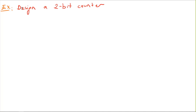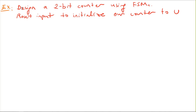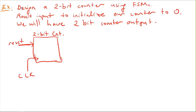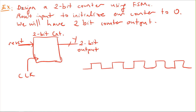In this example we will design a two-bit counter using finite state machines. This two-bit counter will have a reset input to initialize the counter to zero and a two-bit output. The FSM will have a clock signal, a reset signal, and a two-bit output called Y. The counter will use the rising edge of the clock.